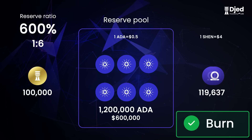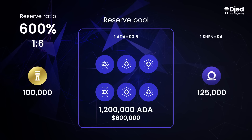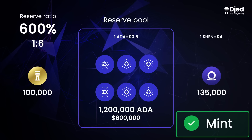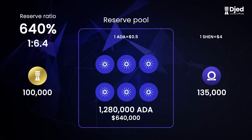Let's say we burn 10,000 SHAN. Now we have a total of 115,000 minted SHAN. This means that we took out of the reserve 80,000 ADA, so now the reserve has 1.12 million ADA. This changes the ratio to 560%, so by burning SHAN, we lowered the reserve ratio. Now let's say we mint an extra 10,000 SHAN, for a total of 135,000 minted SHAN. This means that we added 80,000 ADA to the reserve, so now the reserve has 1.28 million ADA. This changes the ratio to 640%, so by minting SHAN, we raised the reserve ratio.